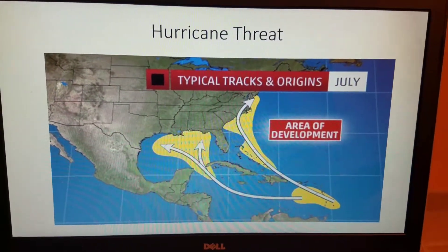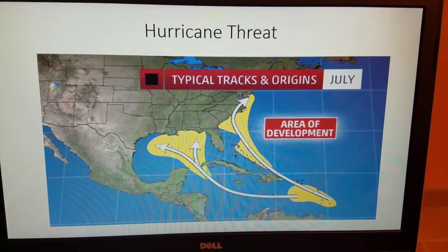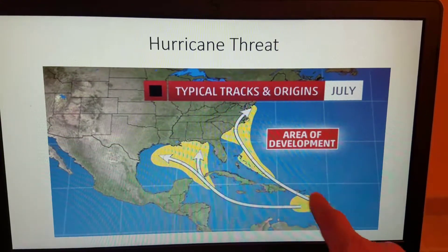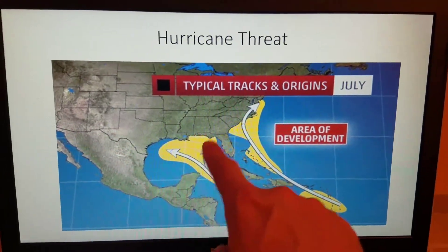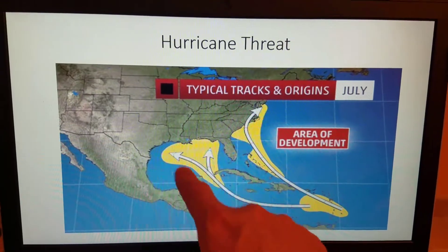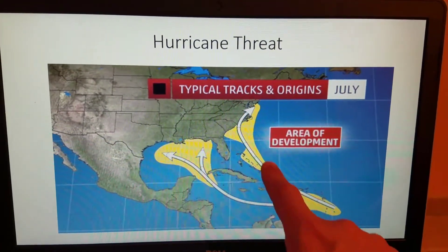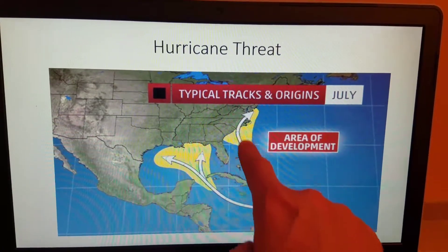Looking at the hurricane threat, typical tracks and origins for July. Yellow areas indicate where these systems generally tend to develop. So we do have some generation possible developmental areas in the Gulf of Mexico into the Caribbean as well as the western Atlantic Ocean.